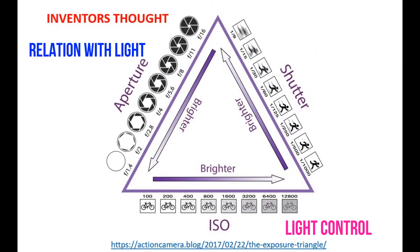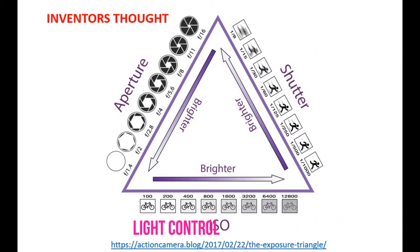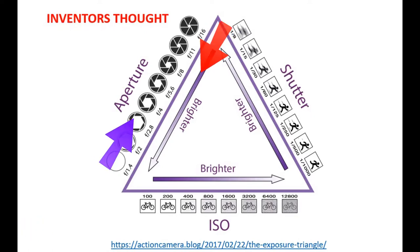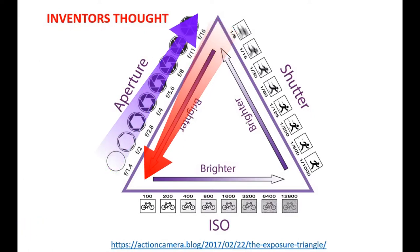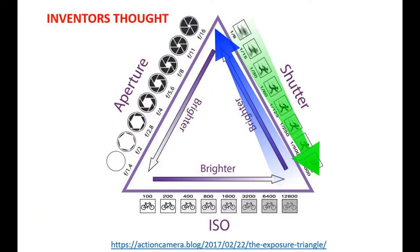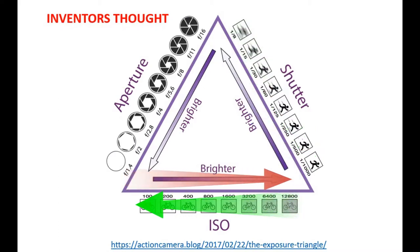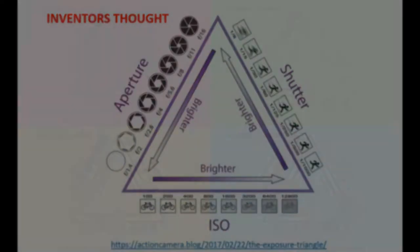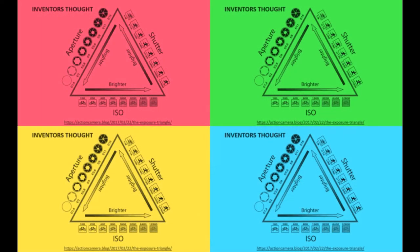1. Aperture, which controls the area over which light can enter the camera. 2. Shutter speed, which controls the duration of the exposure. 3. ISO, which controls the sensitivity of the camera's sensor to a given amount of light.